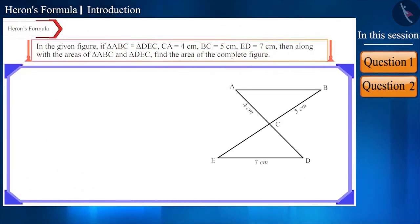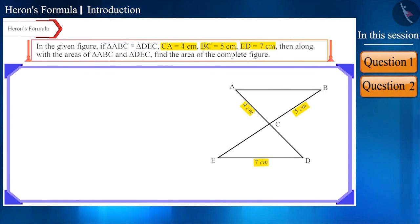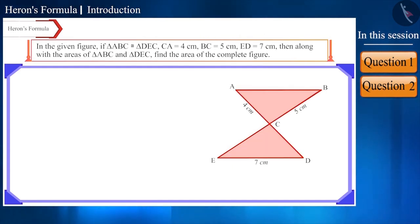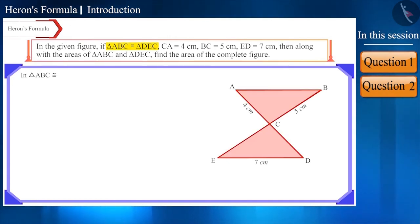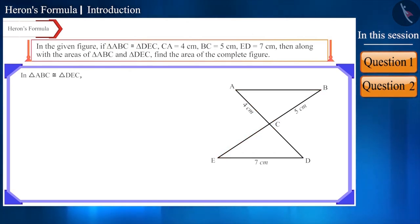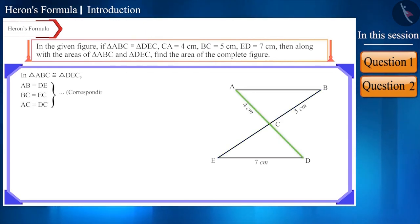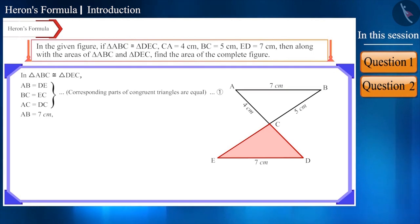Now let's move to the next question. We are given triangle ABC and triangle DEC are congruent. The figure shows the lengths of some sides, and we need to find the areas of both triangles as well as the area of the complete figure. Since triangle ABC ≅ triangle DEC, corresponding parts of congruent triangles are equal. Therefore AB = DE, BC = EC, and AC = DC. So AB = 7 cm, EC = 5 cm, and DC = 4 cm.